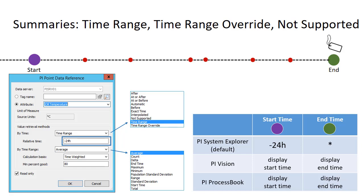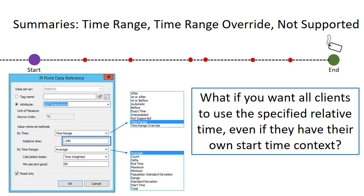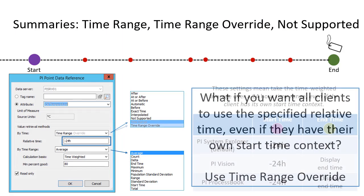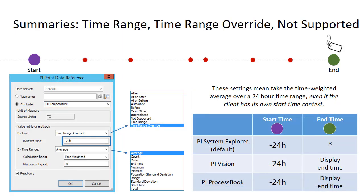These clients will use the start and end times of the display. So when using time range, the relative start time is used only if the client doesn't have its own start time context. If you want PI Vision and PI ProcessBook to also use 24 hours for the average even if the display time range isn't 24 hours, this is why you use time range override. In that case, the end time of the summary call refers to the end time of the display, but the summary call is forced to be the end time minus 24 hours.